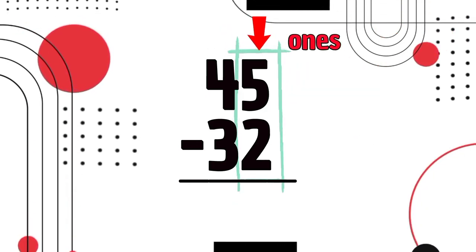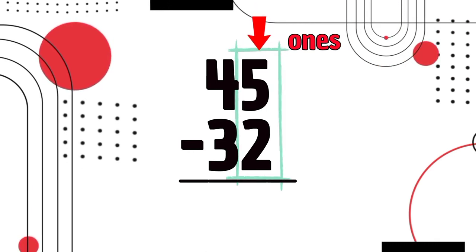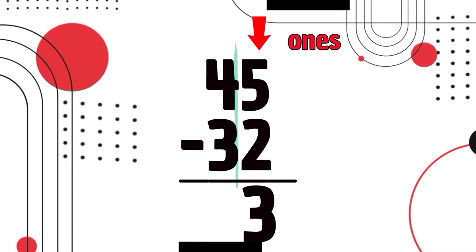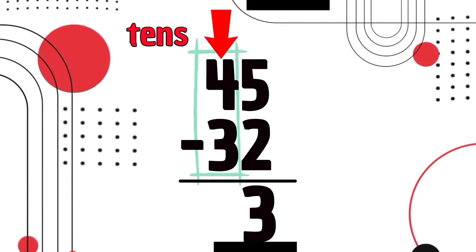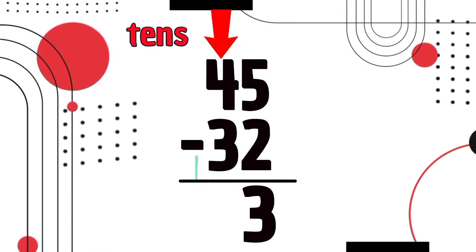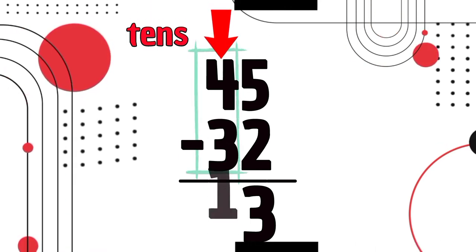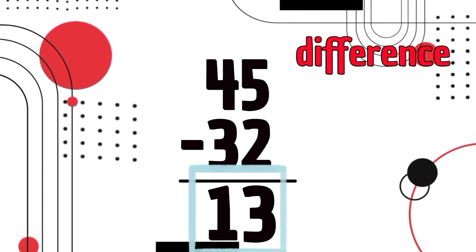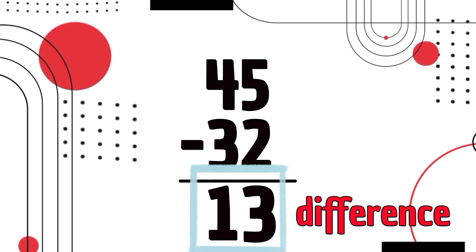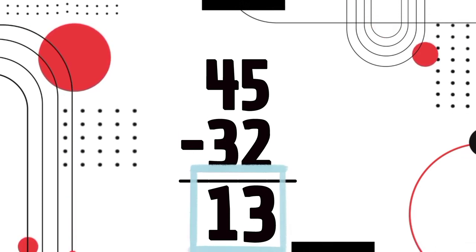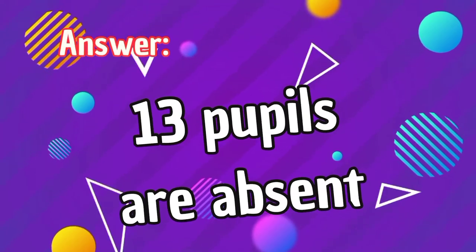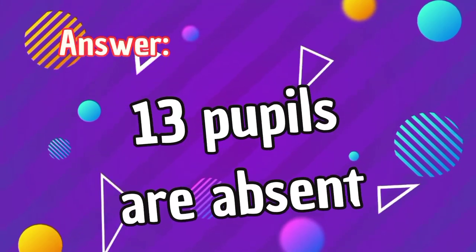First, we need to do the ones column. 5 minus 2 equals 3, right? Then, we do the tens. 4 minus 3 equals 1, right? 13 is the difference. 45 minus 32 is 13. So our answer is 13 pupils are absent.